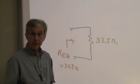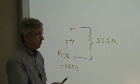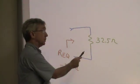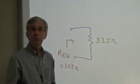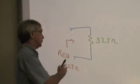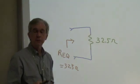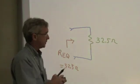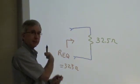From the perspective of whatever we connect to this network, everything to the right of these connection terminals could have been replaced by a 32.5 ohm resistor. It would not affect anything in terms of what we connect to in terms of the results in the rest of the circuit.